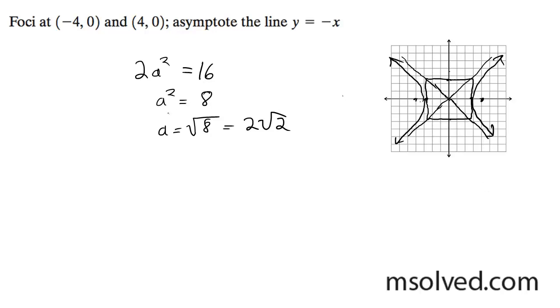Oh, I almost always forget. Gotta write the equation. So x squared over 8 minus y squared over 8 is equal to 1. That's it.